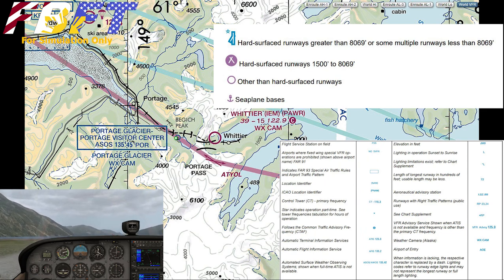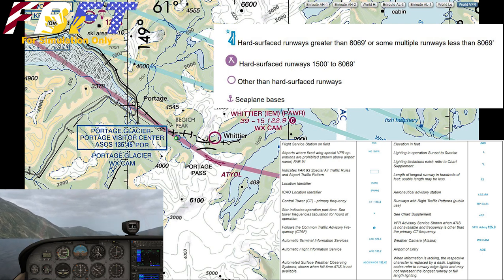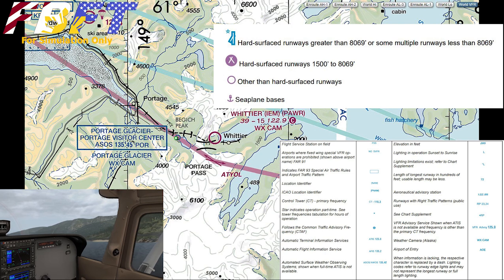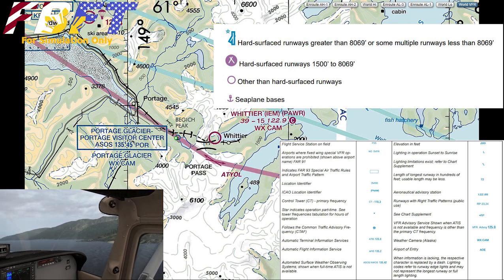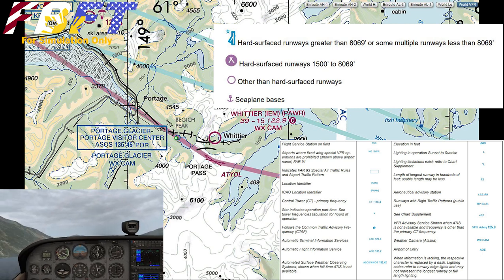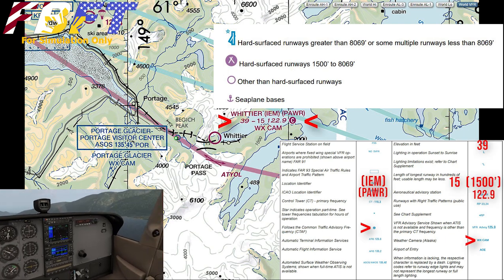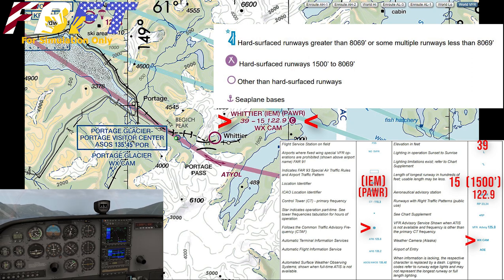There is a ton of information included in these labels. The FAA resource I am using here had a sample showing every imaginable piece of information you could get off an airport label, and it was pretty overwhelming. So let's take the Whittier one and see what we've got. Whittier is obviously the airport name. IEM is the three-letter identifier, the sort you might see on your luggage tags or airline tickets — not very useful in the sim.